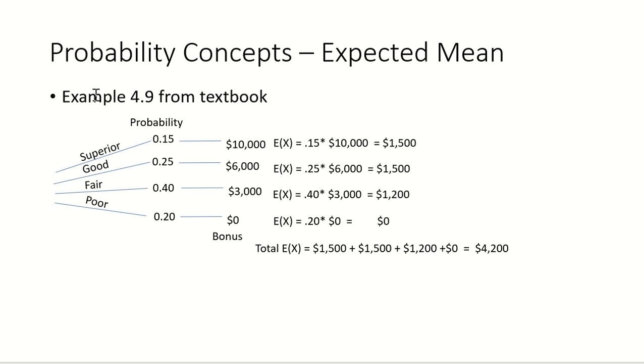Example 4.9 from the textbook describes a bonus system based on individual performance, where there's superior, good, fair, and poor. If someone is superior, they get a bonus of $10,000, good gets $6,000, fair gets $3,000, and poor gets nothing.